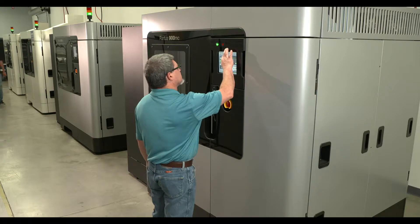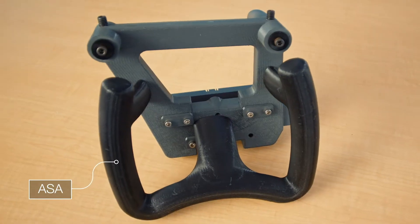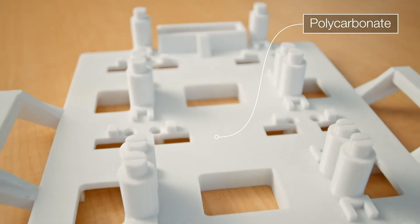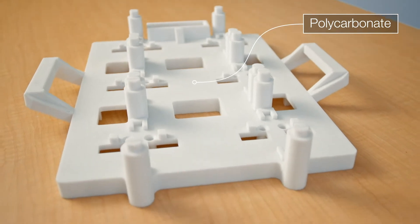Depending on what the application is, the material might differ. So for instance, for a low-end application, ASA might be an appropriate material. If there's higher requirements on the inspection fixture, something like a polycarbonate like you see here might be more appropriate. But depending on the application, Stratasys FDM printers have a wide variety of solutions available.